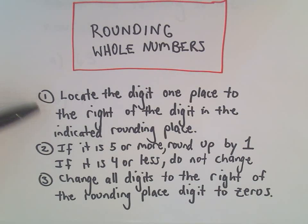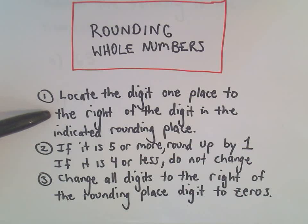First off, we locate the digit one place to the right of the digit in the indicated rounding place. So we're going to figure out what number we want to round to, and we're going to look one place to the right.